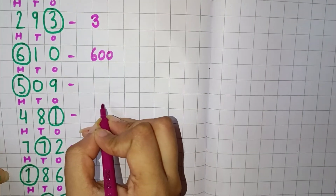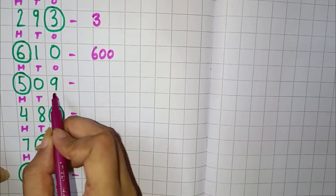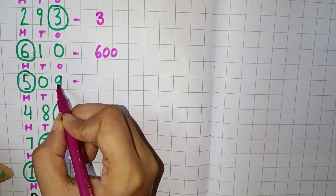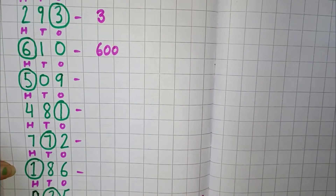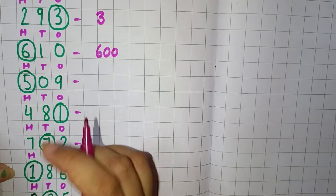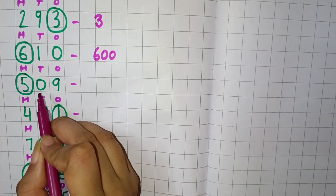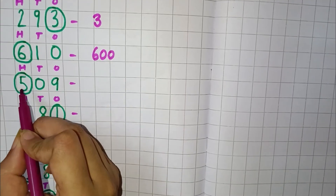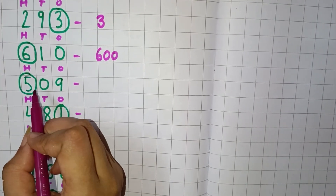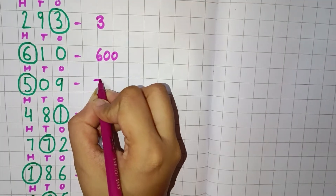Next we have 509. Here 9 is in the 1's place, 0 is in the 10's place, and 5 is in the 100's place. 5 is circled here, so we will write here 500.